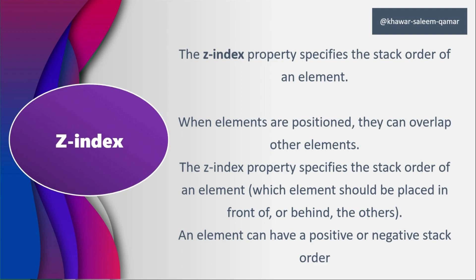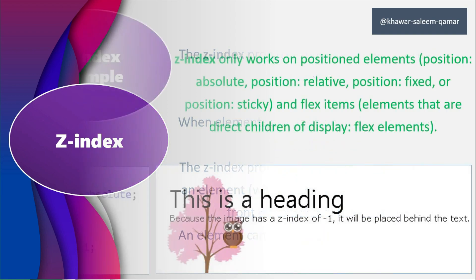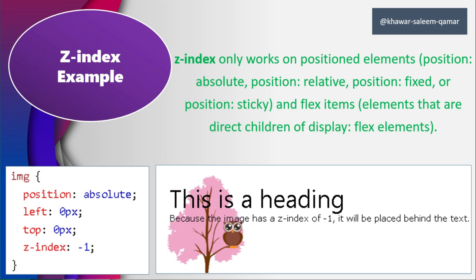Z-index is used to specify the stack order of an element when elements are placed inside our document. Elements can overlap each other, so one can come in front of the other when we want it in the back. For example, if you have a card and you are scrolling over your page, when the card reaches the navbar it overlaps and moves above it, hiding the navbar. But we want it to pass under it, so for that we give it the z-index property.